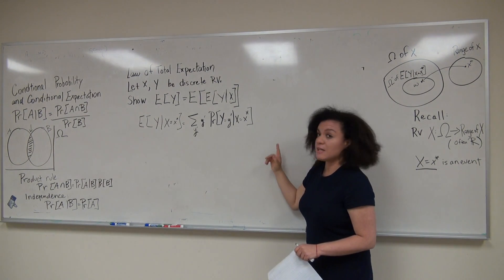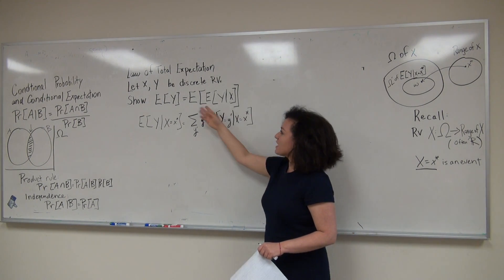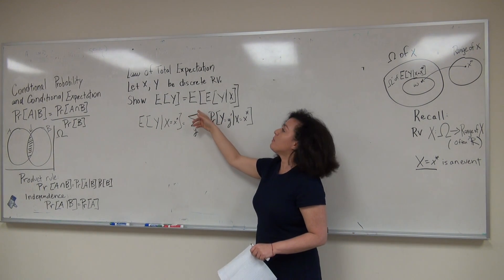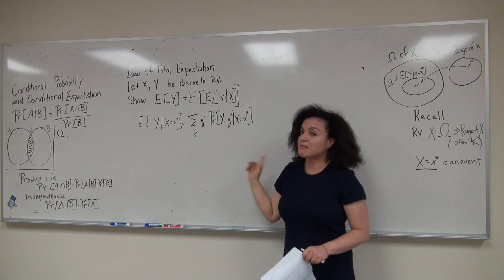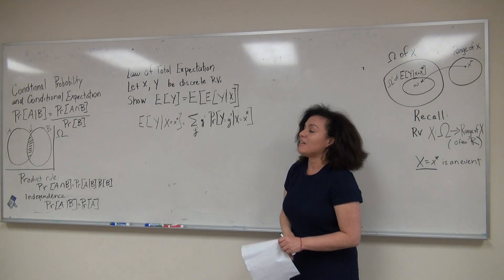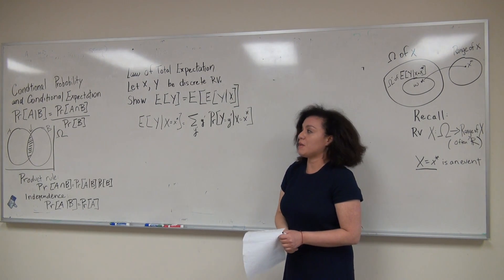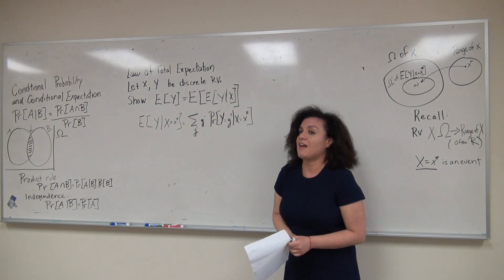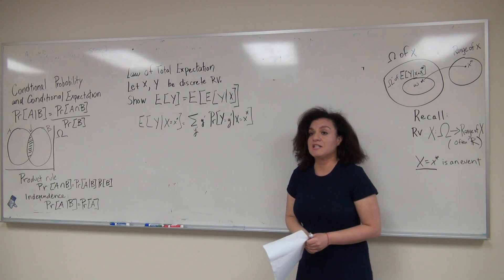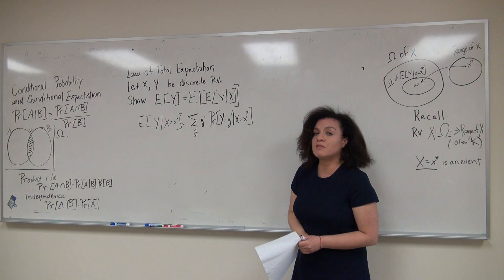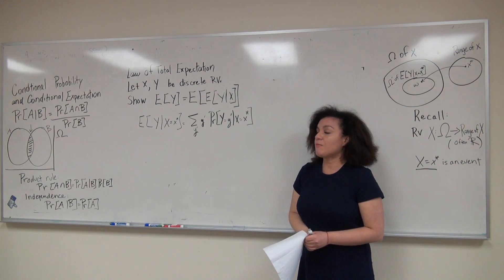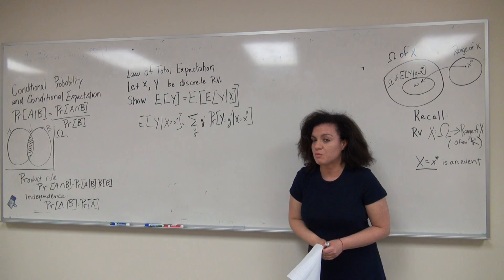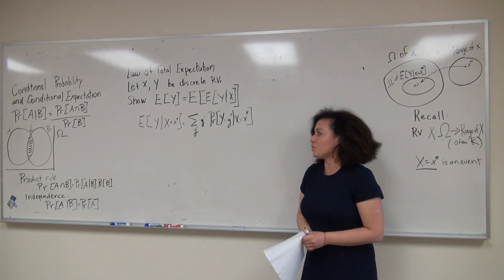The first thing to observe is that we take expectations of random variables, which tells us immediately that the expectation of Y given X is itself a random variable. I will show that after we define conditional expectation. Conditional expectation is very similar to regular expectation, except instead of just probabilities of events, we're looking at conditional probabilities.